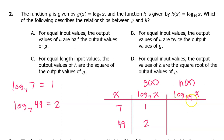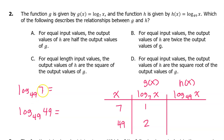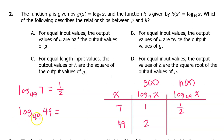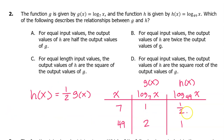Now let's evaluate log base 49 of x at 7 and 49. What exponent will turn 49 into 7? We know that 7 is the square root of 49, so the 1/2 power is the exponent that turns 49 into 7, because 49 to the 1/2 power is the square root of 49. So log base 49 of 7 is 1/2. Of course, 49 to the 1st power is 49, so log base 49 of 49 is 1. It looks like h is half the value of g — for equal input values, the output values of h are half the output values of g. So the answer is A.